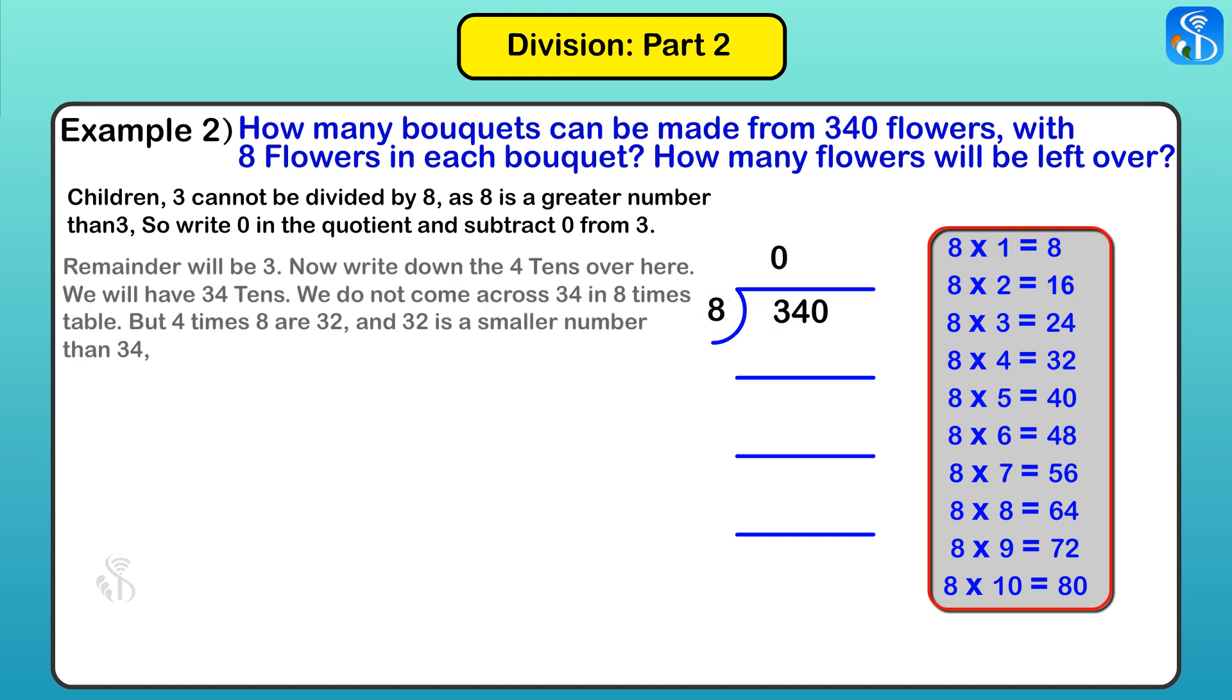Now write down the 4 tens over here. We will have 34 tens. We do not come across 34 in the 8 times table, but 4×8=32, and 32 is a smaller number than 34.